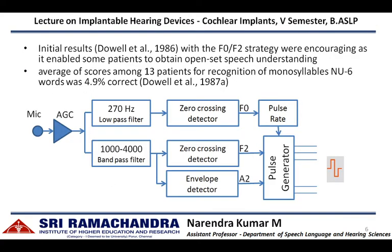At any given point in time, the F0-F2 strategy activates only one electrode contact area within the cochlea. Whether it is the basal or apical electrode depends on the extracted second formant frequency. If the second formant frequency is closer to 1000 Hz, the apical-most electrode is activated. If it is closer to 4000 Hz, the basal-most electrode is activated. The rate of firing corresponds to the fundamental frequency, and the amplitude of firing corresponds to the amplitude variations of the extracted second formant frequency.